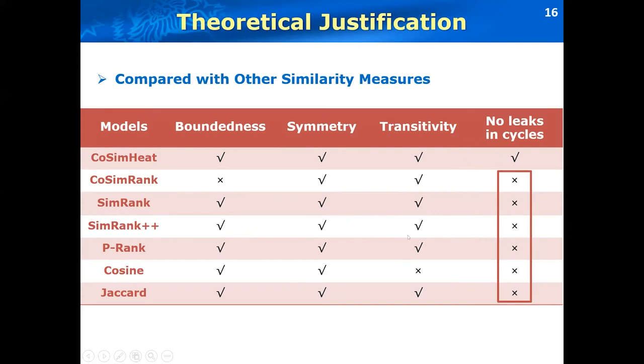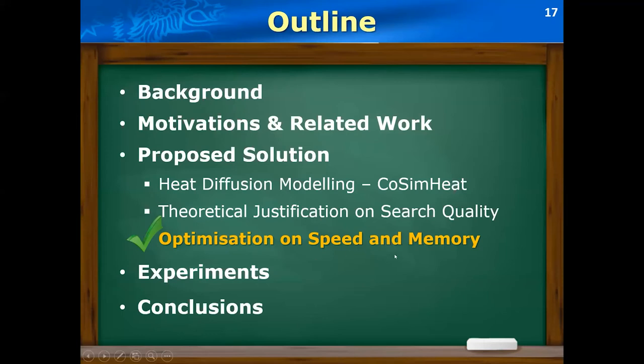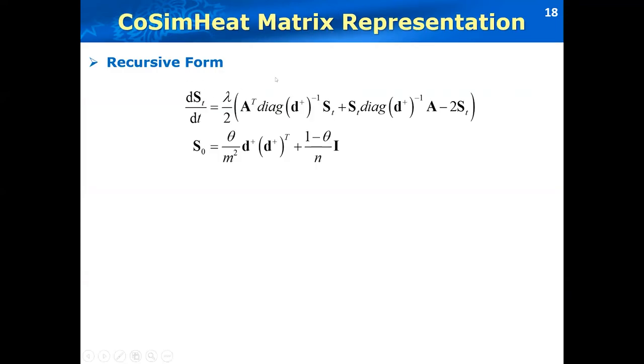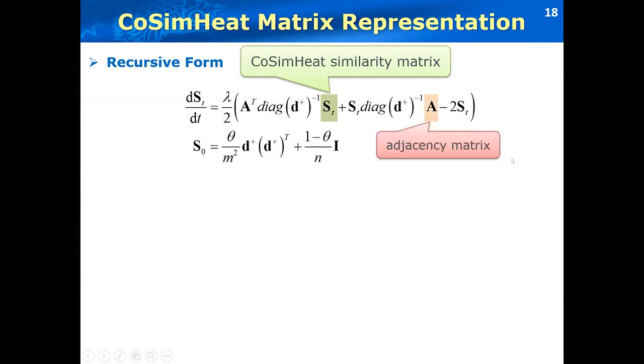Next, we provide optimization techniques to speed up the cosine heat search on large graphs. So first, we represent our cosine heat diffusion models in the following matrix notations, where S is the cosine heat similarity matrix, whose AB entry denotes the average temperature between the node A and B at the time T. A is the graph adjacency matrix, and D is our degree vector. I is the identity matrix. M and N denotes the number of nodes and edges in the graph respectively.